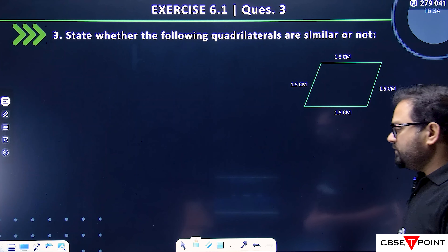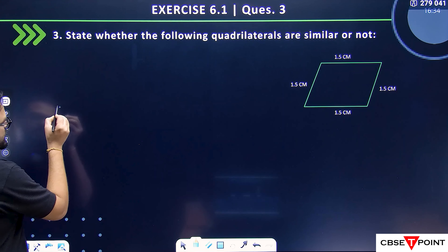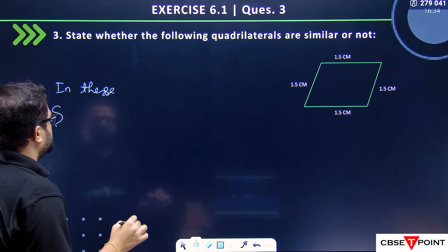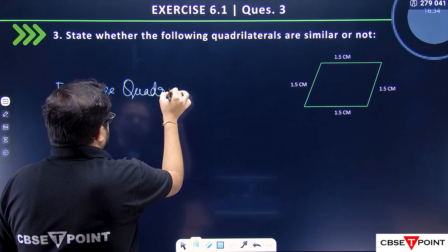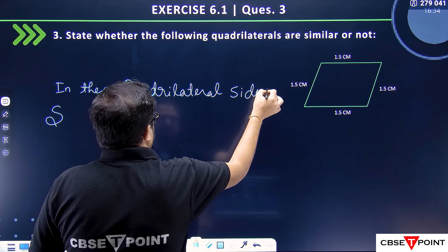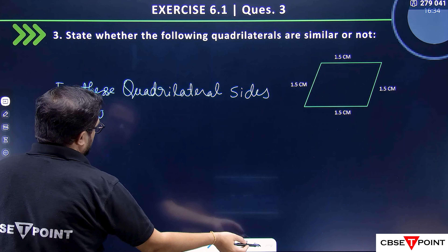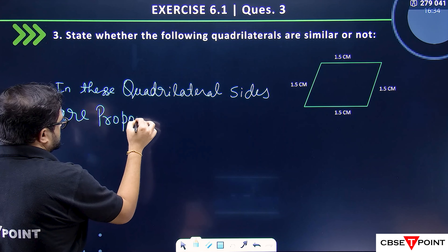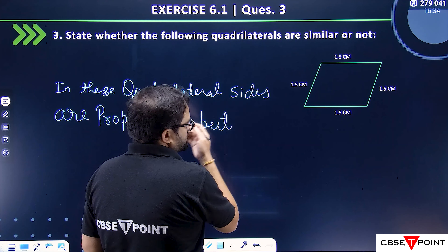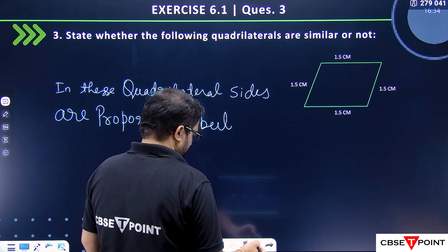If the rhombus had all angles equal to 90°, we could have said it is similar to the square. But in these quadrilaterals, while the sides are proportional, the corresponding angles are not equal.